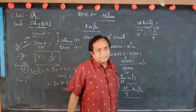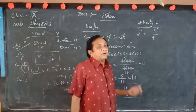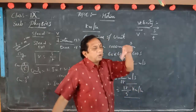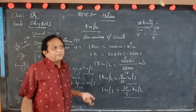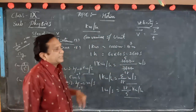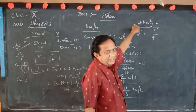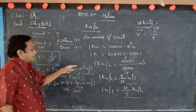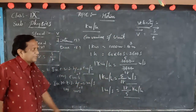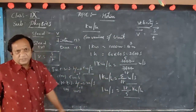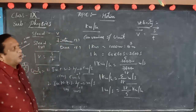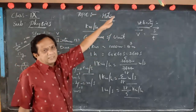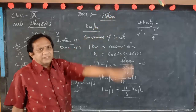Speed and velocity — if a bus travels in a particular direction, we say velocity because we can indicate the direction. If direction is indicated, it becomes velocity. The units are the same: metres per second in the MKS system, centimetres per second in the CGS system. Since velocity has direction, it is a vector quantity.